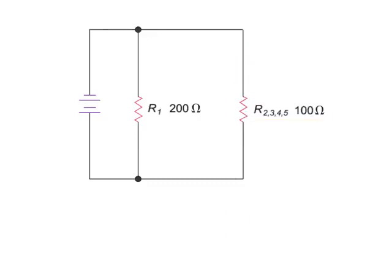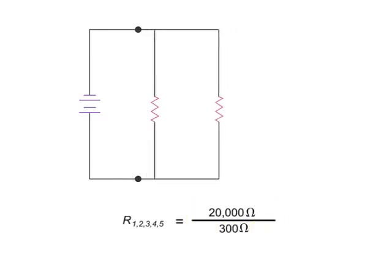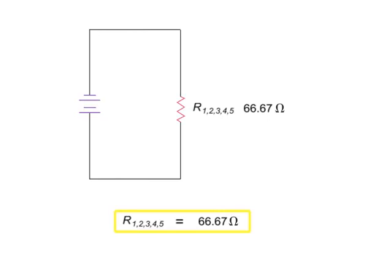And finally, we are left with two resistance values in parallel, the R1 resistance of 200 ohms, and the equivalent value of 100 ohms for resistors 2, 3, 4, and 5. Again, using the product over sum equation, we can determine the combined resistance. Multiplying 200 times 100 gives 20,000 divided by 200 plus 100, which is 300, resulting in an overall circuit resistance value of 66.67 ohms.